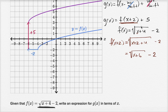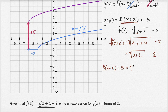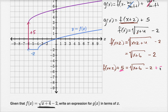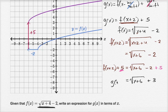Now what is f of x plus two plus five? That's going to be the square root of x plus six minus two, and now we add five. So we get the square root of x plus six minus two plus five, which equals the square root of x plus six plus three. And that is equal to g of x.